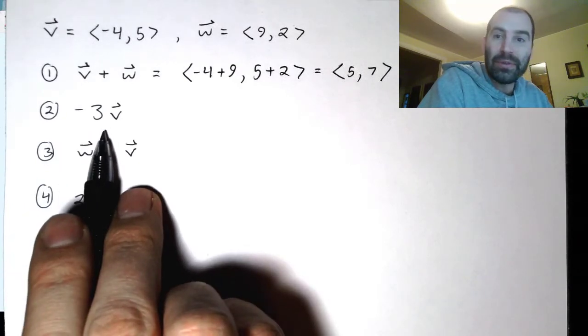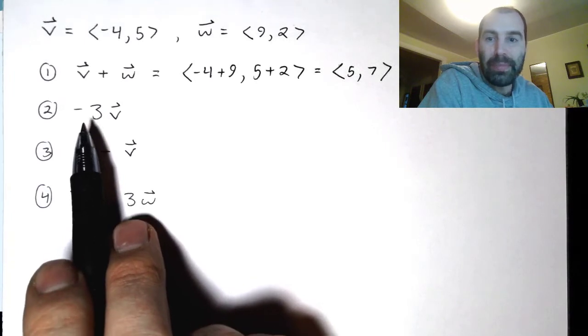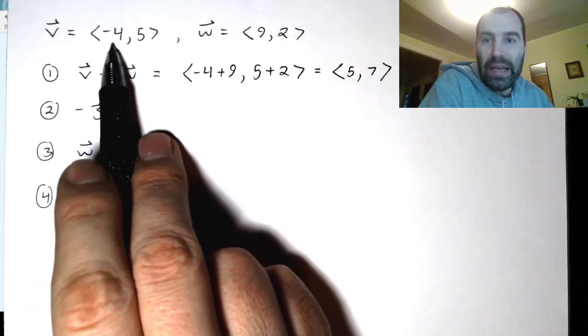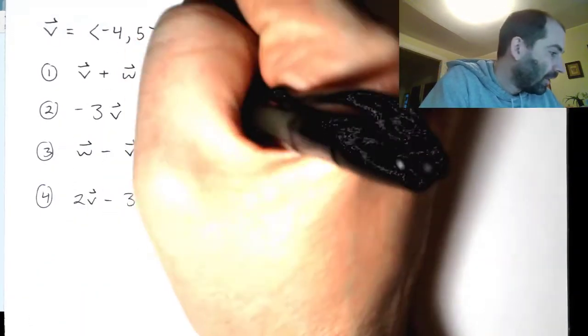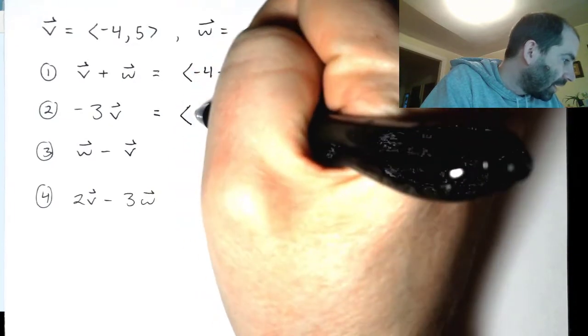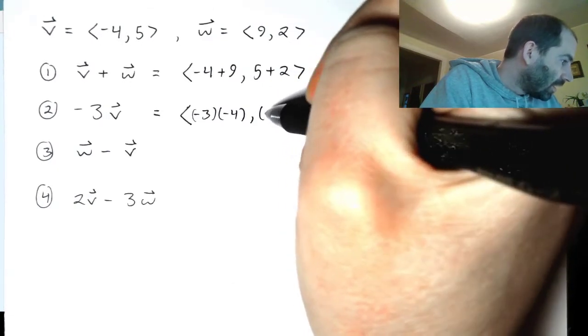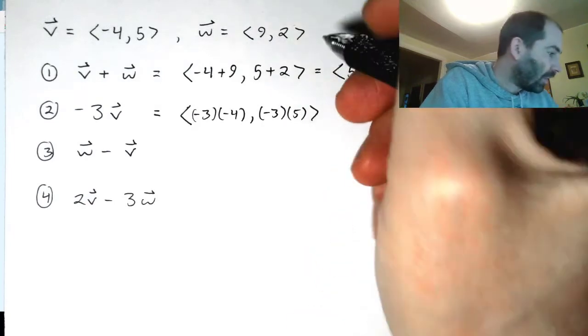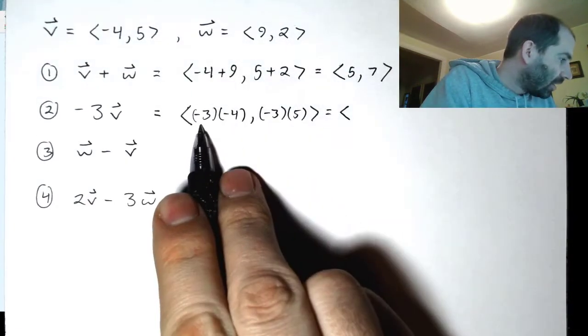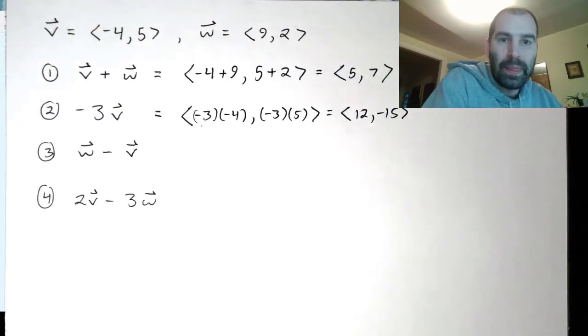What about negative 3 times v? Well, how do I do that? Scalar multiplication works by just multiplying each component of the vector times that number. So let's see what happens here. I'm going to have negative 3 times negative 4, and then negative 3 times 5. So that's the vector 12, negative 15.